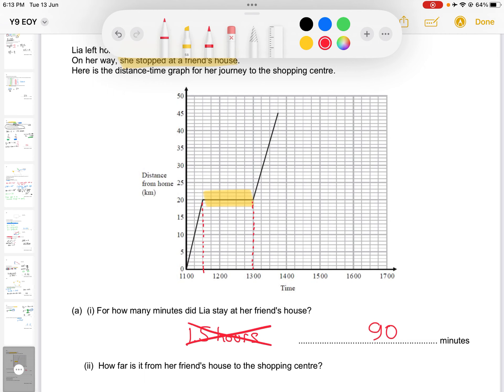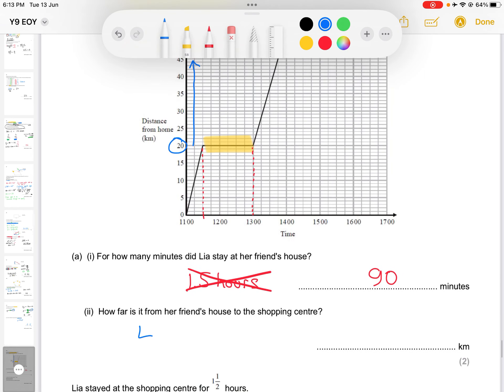Part 2: How far is it from her friend's house to the shopping center? So her friend's house is here, the shopping center is all the way up there. So how far from her friend's house to the shopping center is going to be that distance there. So it's going to be the difference between 45 and 20, giving us 25 kilometers.